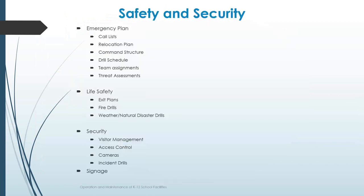Safety and security may be the most important area when looking at the needs of a facility, and today's environment has put even more focus on this. Every school starts by doing that with an emergency plan — it's required. In the State of Tennessee, every school must have an emergency plan. That plan will include things like call lists, a relocation plan, command structure, drill schedule, team assignments, and threat assessments, identifying the individuals who are supposed to carry out every section of that plan.